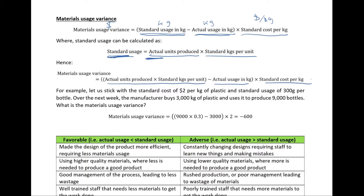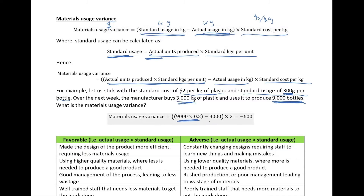Let's try an example. Say we have a standard cost of $2 per Kg of plastic and a standard usage of 300 grams per bottle. Over the next week, the manufacturer buys 3,000 Kg of plastic and uses it to produce 9,000 bottles. For the materials usage variance, we start by calculating standard usage: actual units produced (9,000 bottles) multiplied by 0.3 Kg gives standard usage of 2,700 Kg. Minus actual usage of 3,000 Kg, multiplied by the standard cost of $2 per Kg.